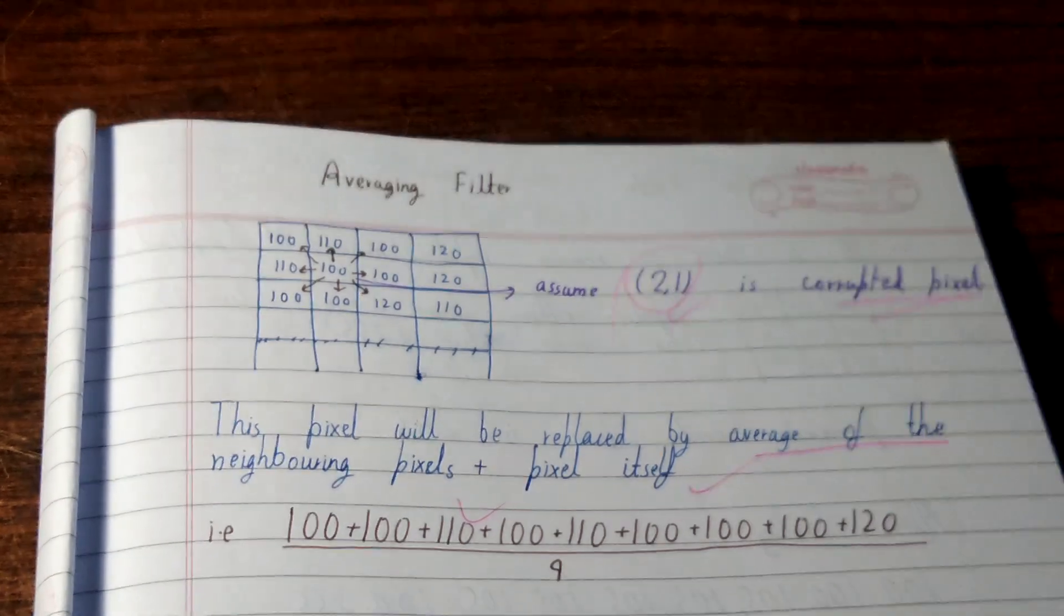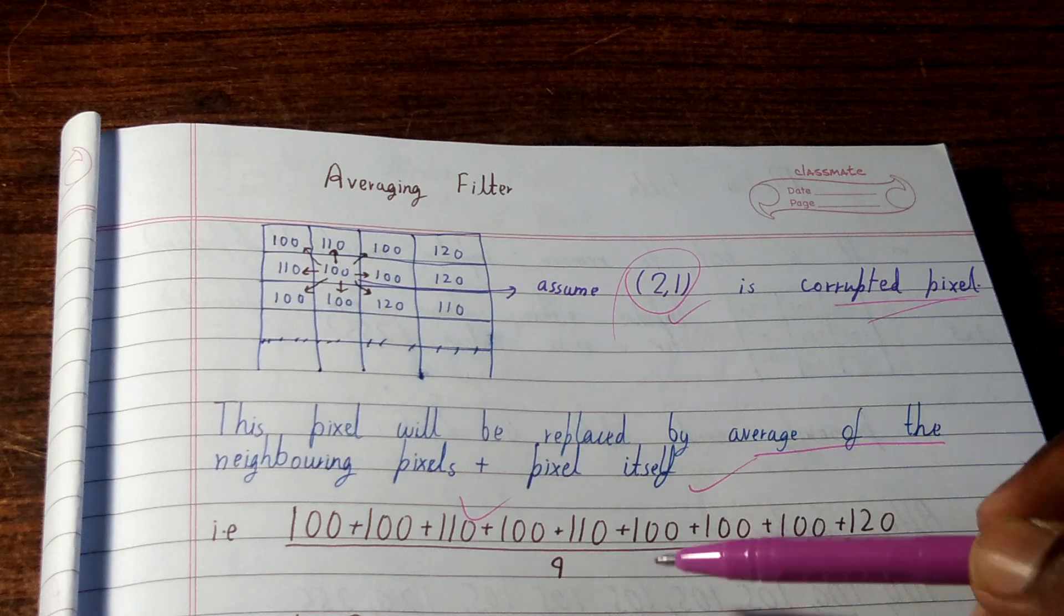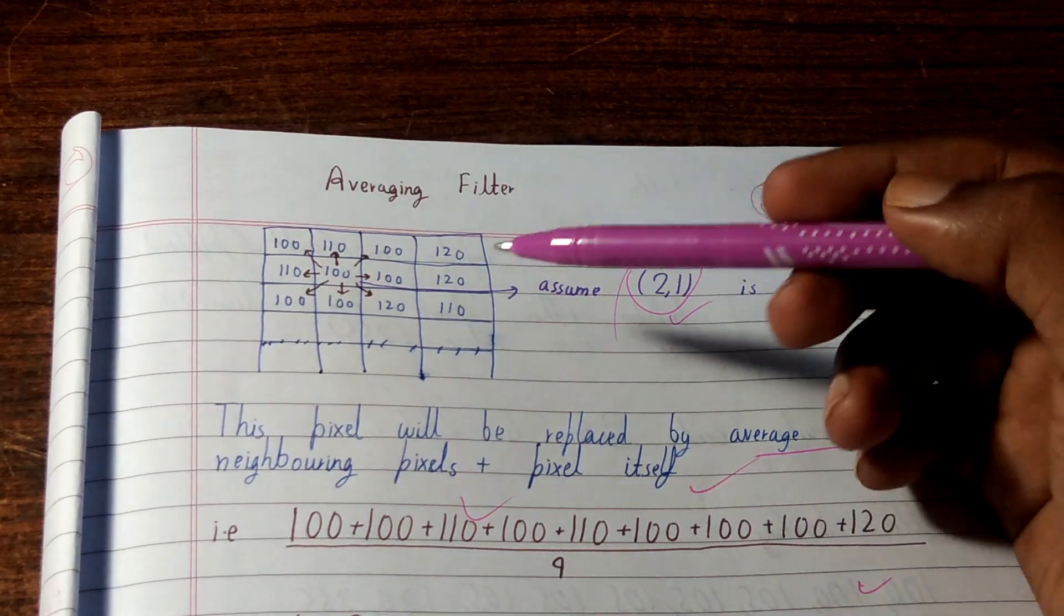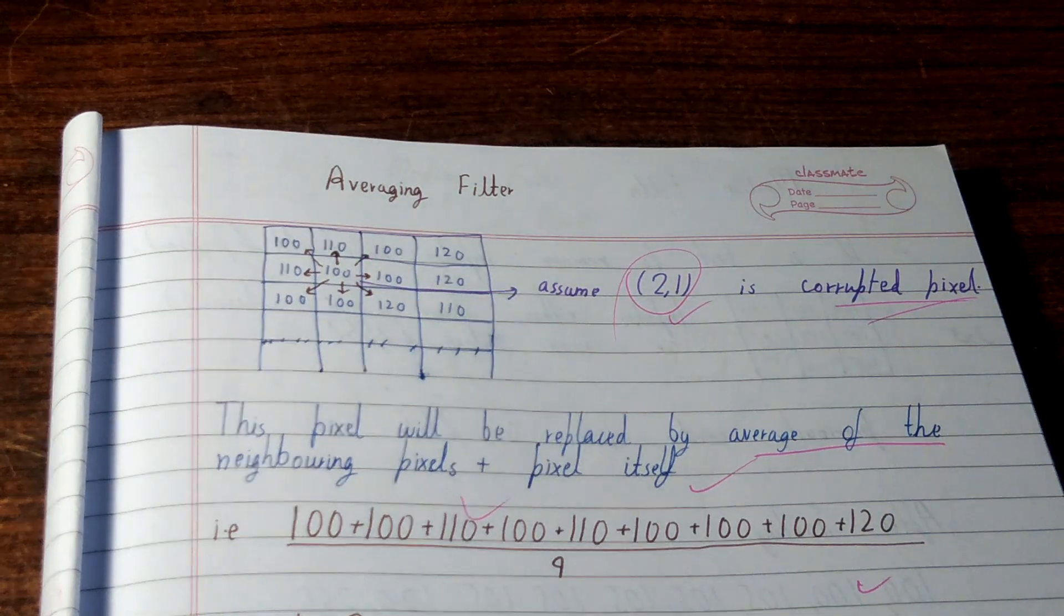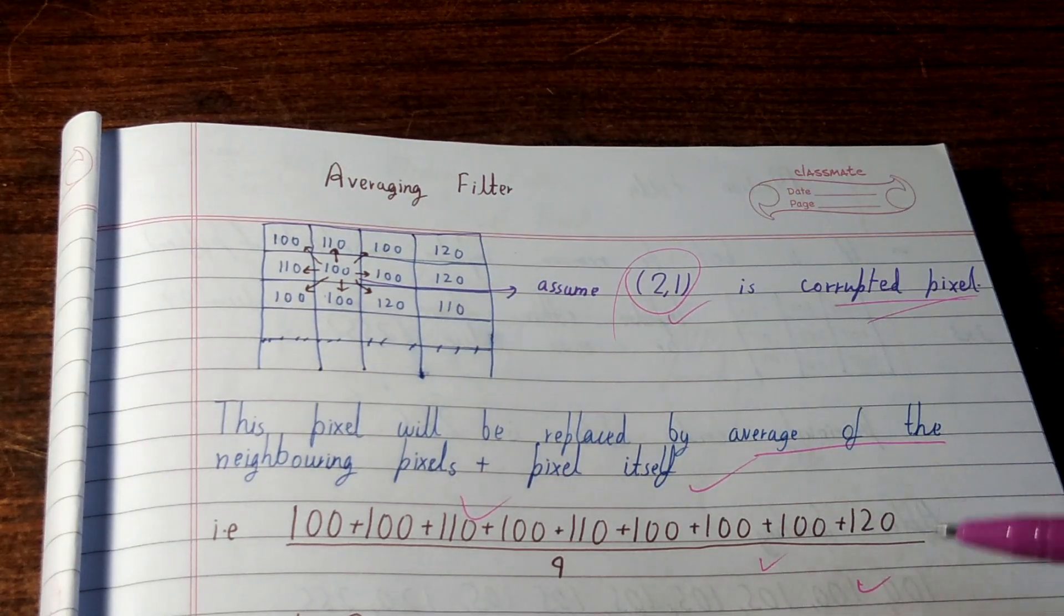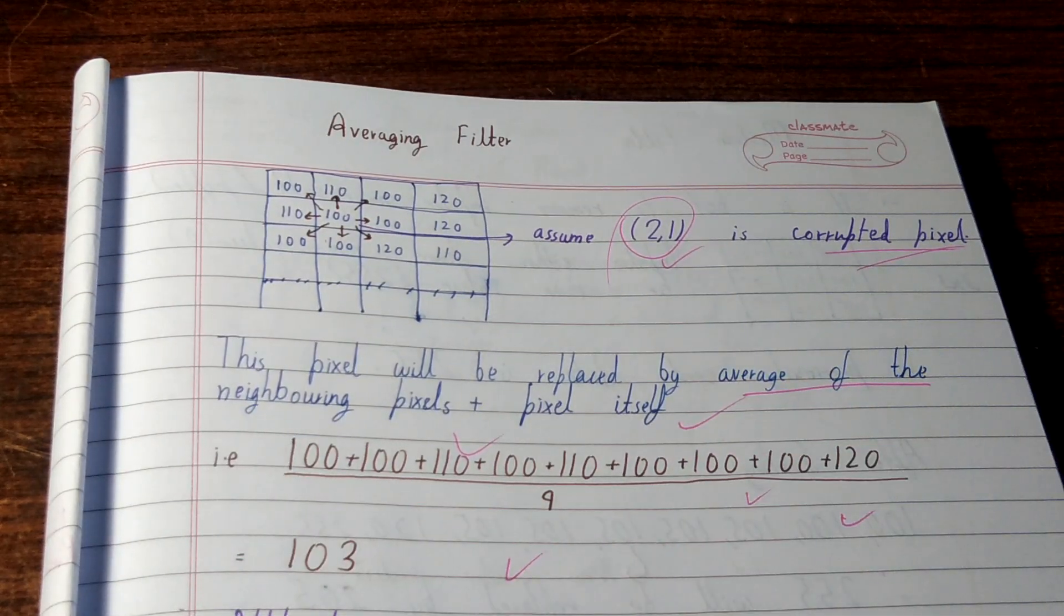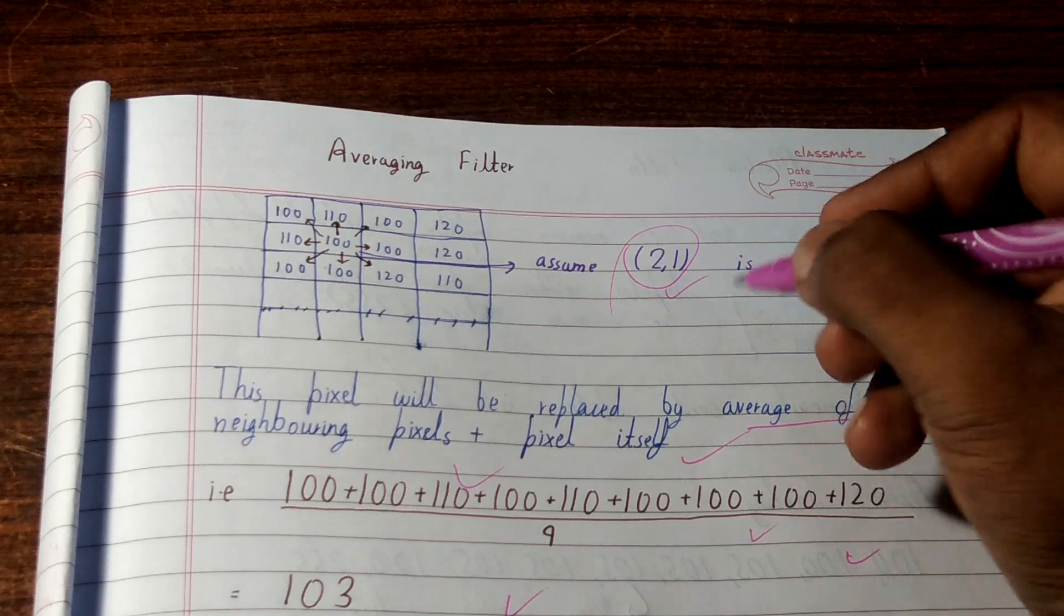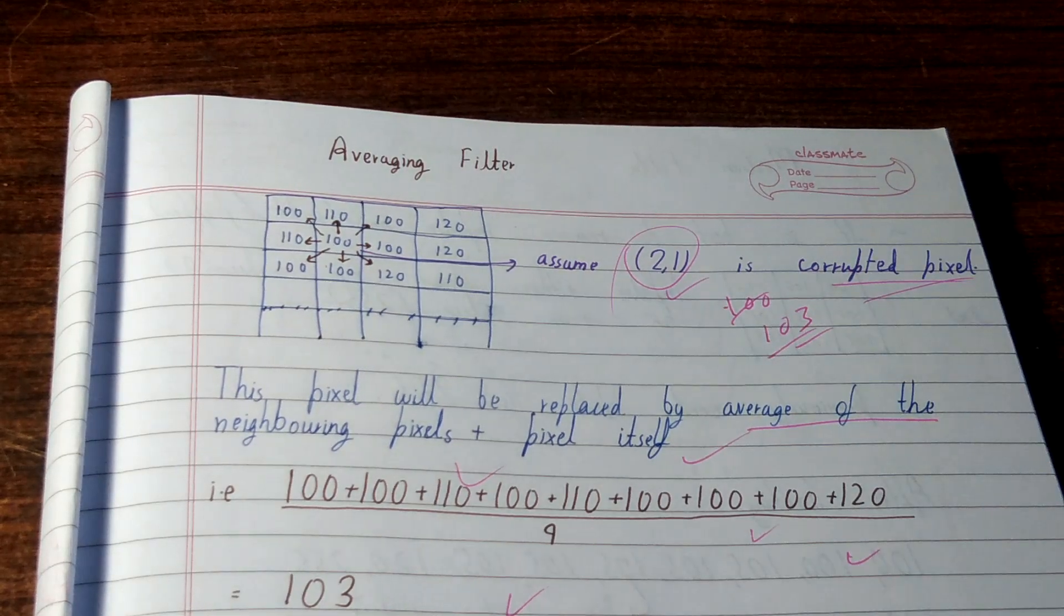So what you have to do is take all the neighboring pixels and the pixel itself, that is 100, and divide by nine. Because all the neighbors - if you take one, two, three, four, five, six, seven, eight - it has eight neighbors, and one for itself, so nine. And if you divide then you'll get a value like 103 in this case, and you will replace it by 103, which was previously 100. So this is how you apply averaging filter when a pixel value is corrupted.